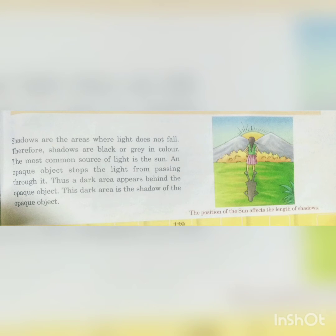Shadows are the areas where light does not fall. Shadow ek aisi area hai jahan pe light bilkul nahi aati. Therefore, shadow ya to black color ka hota hai ya gray color ka. The most common source of light is the sun. An opaque object stops the light from passing through it, so a dark area appears behind the opaque object — aur yahi dark area opaque object ka shadow hai, opaque object ki parchayi hai.